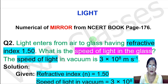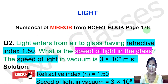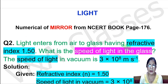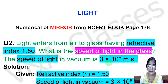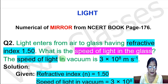Students, hope you are doing well. In this video we will discuss a numerical from the NCERT book, page 176, chapter Light, question number two. Light enters from air to glass having refractive index 1.50. What is the speed of light in the glass?